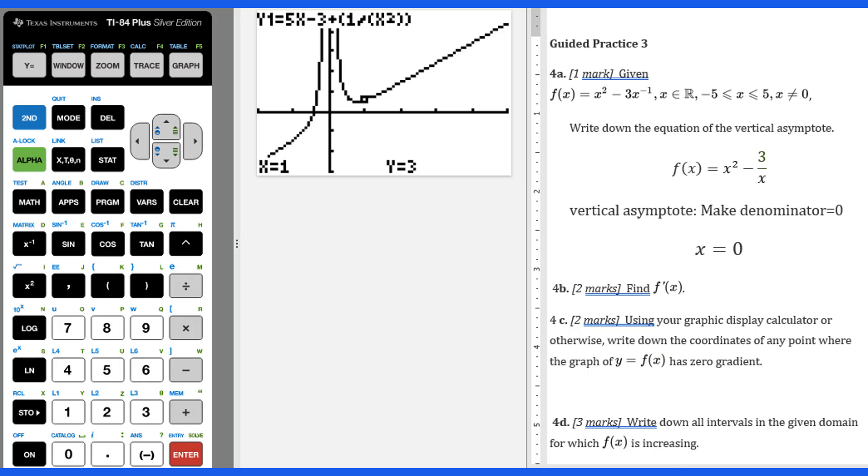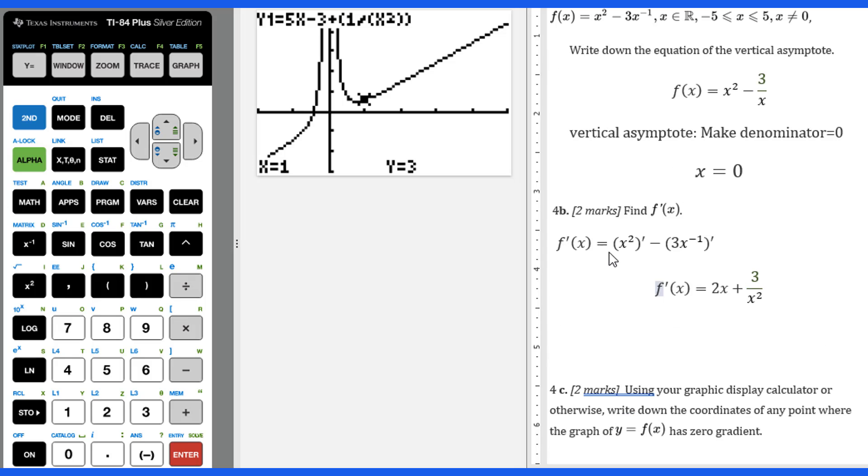Then find the derivative of f(x). For f'(x) equals x squared, we do derivative minus 3x to the negative first power, we do derivative. Then f'(x) equals, drop down minus one, that's the power rule of derivative. You get 2x plus 3 over x squared, because you drop down, get negative one, multiplied by negative three is positive three. The negative one minus one is x to the negative second power, so we get x squared.